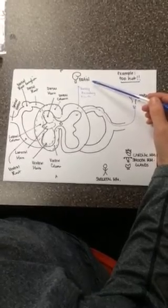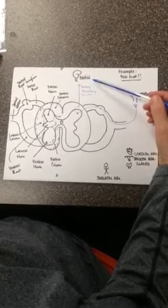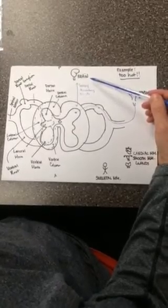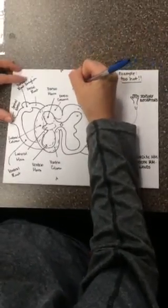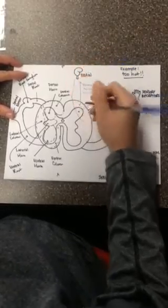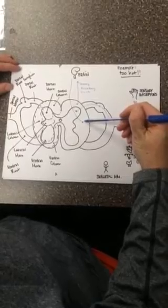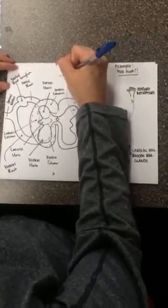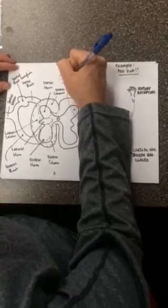So in this example, the brain has decided it is too hot and we do want to take action. That action is going to be to initiate sweating to cool the body. So the brain will then send a message all the way down. In this example, it's going to go to the lateral white column via the motor descending tracts.